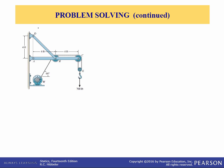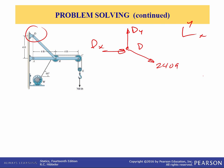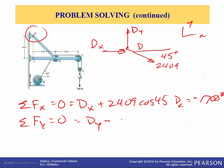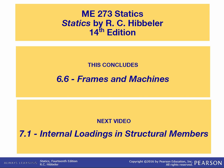The last thing is to look at pin D. Free body diagram of pin D: we have D_y, D_x, and the force in member DB which we solved to be 2409 pounds at 45 degrees. Summing forces in X equals zero: D_x plus 2409 times cosine 45, so D_x equals negative 1700 pounds. Summing forces in Y equals zero: D_y minus 2409 times sine 45, so D_y equals positive 1700 pounds. This concludes the lecture on chapter 6.6, Frames and Machines. The next video moves into chapter 7.1, Internal Loadings and Structural Members. See you in cyberspace.